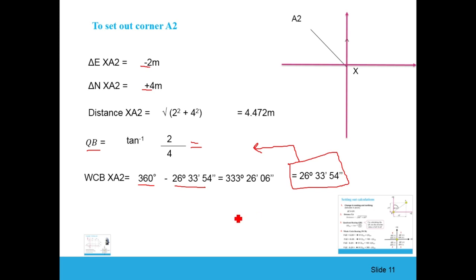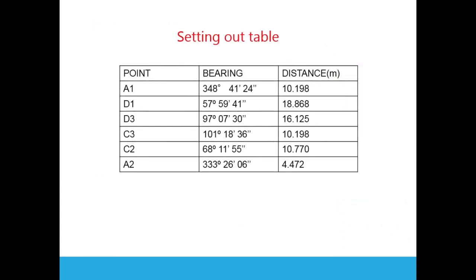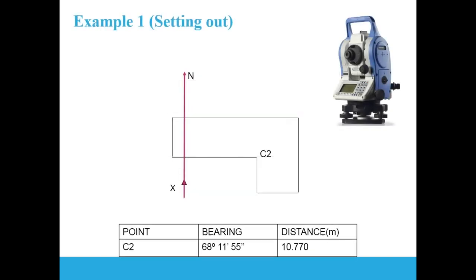Now that we've calculated all the data, we arrange a setting out table listing the whole circle bearing and distance for each corner: A1, D1, D3, C3, C2, and A2. This table is taken to the field to set out all corners on the ground.